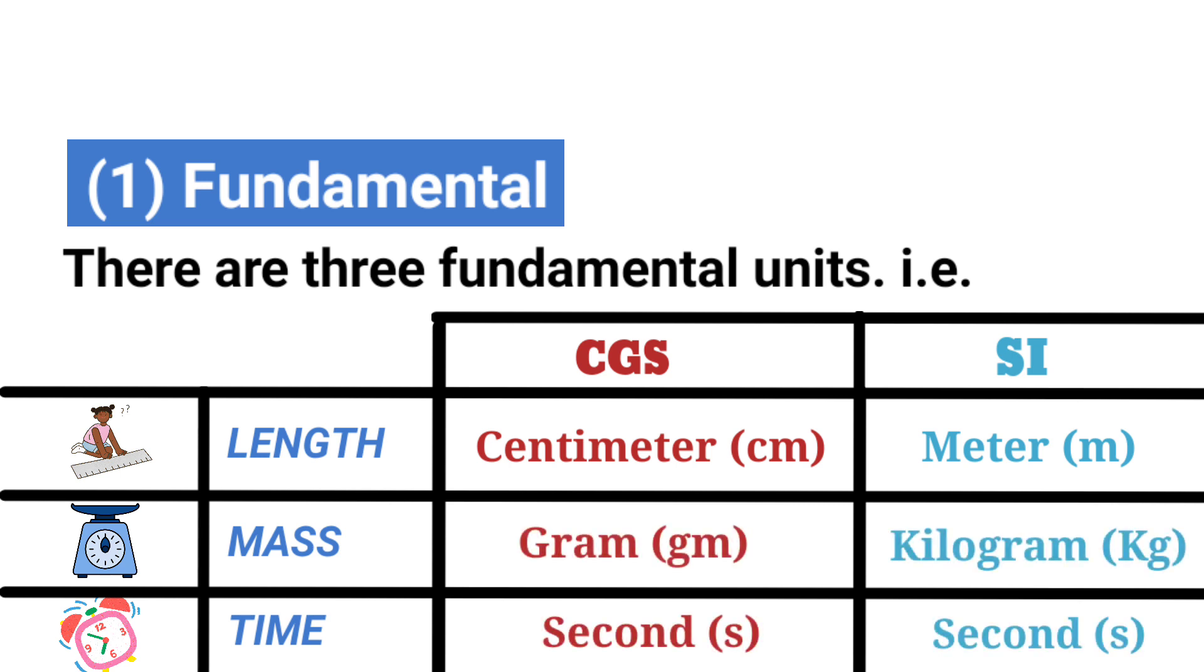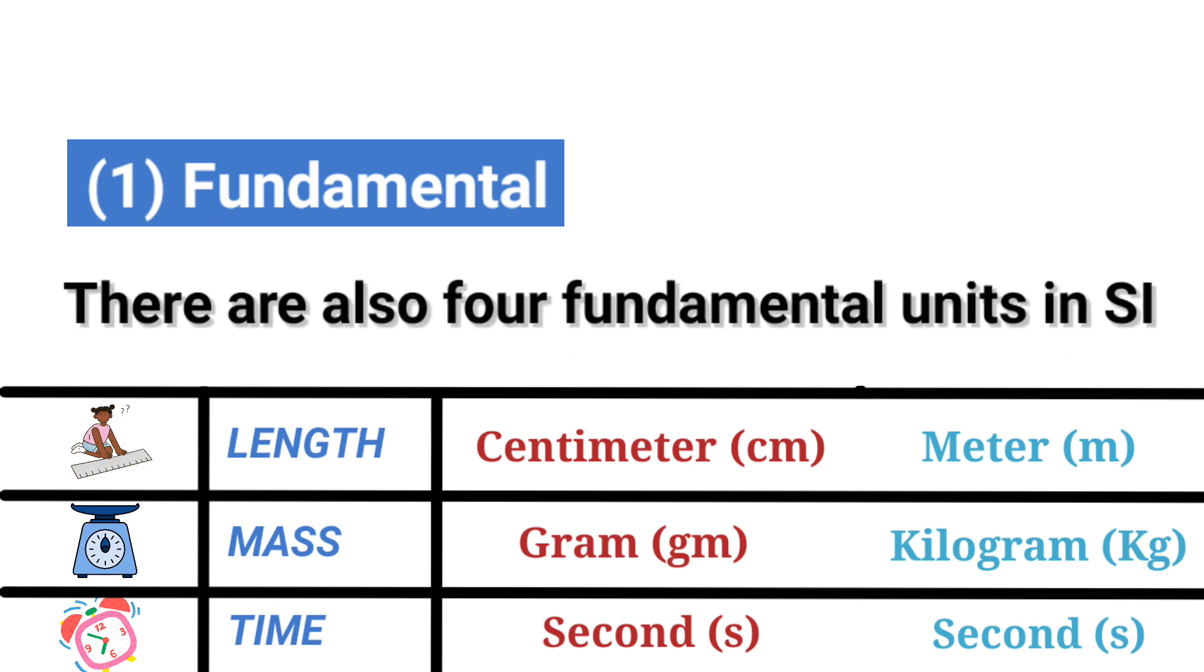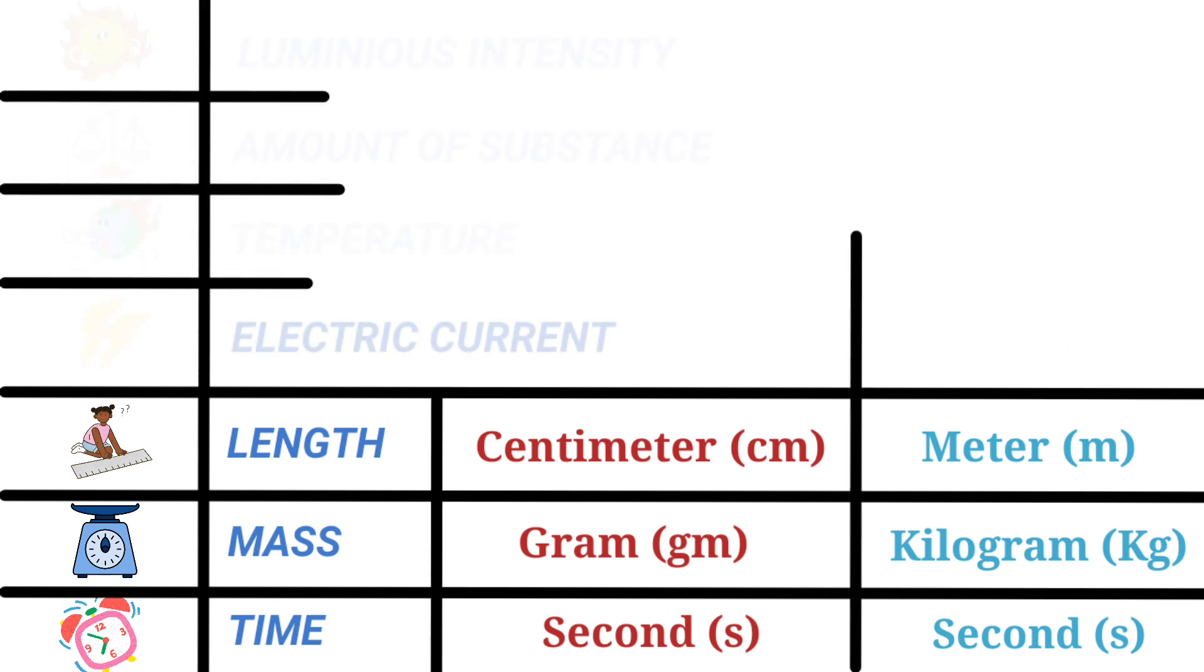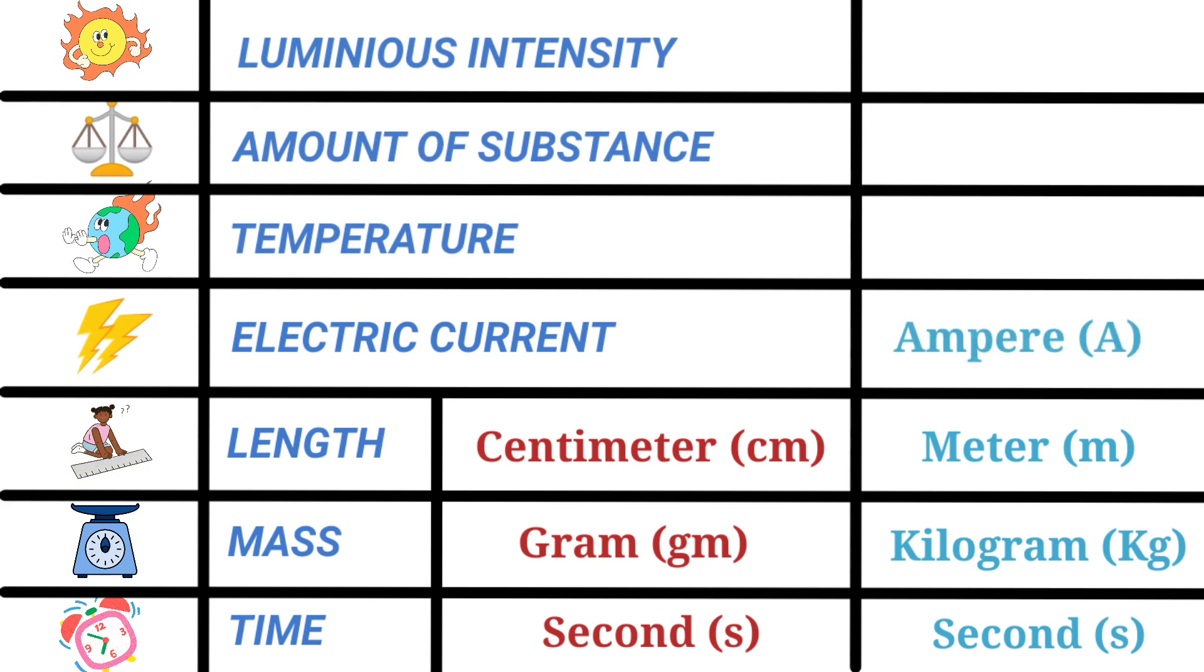Mass: gram and kilogram. Time: second. There are also four fundamental units in SI that are electric current, that is ampere; temperature, Kelvin; amount of substance, mole; and luminous intensity, that is candela.